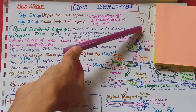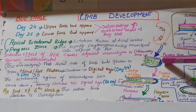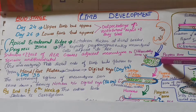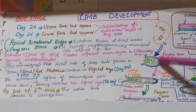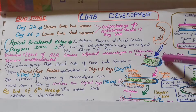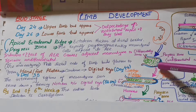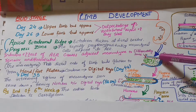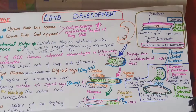The ectoderm overlies the mesoderm in all regions. At the distal ends of the limb bud, this ectoderm thickens to form a specific structure called the apical ectodermal ridge (AER). The mesenchymal cells adjacent to the AER are not allowed to differentiate — they keep proliferating. The inductive effect of the AER does not allow these cells to differentiate completely. This proliferating zone where cells remain undifferentiated is called the progress zone.